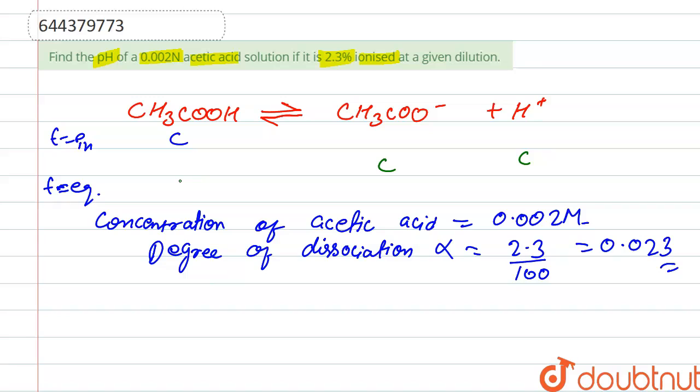So here, initially it is one mole, so after dissociation the number of moles formed - here it is alpha and here it is also one minus alpha. So one minus alpha, and its concentration is C, so multiplied by C.